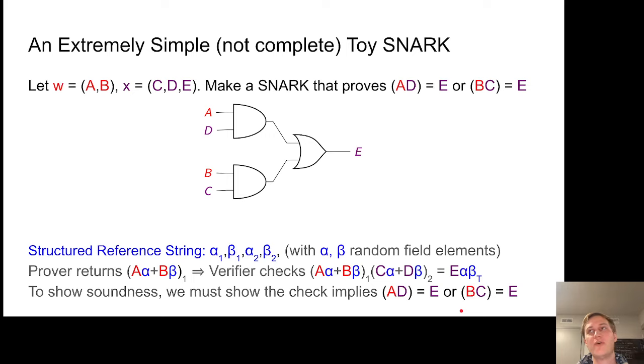I'll walk through how the proof goes for an extremely simple SNARK. This SNARK isn't even actually complete, but hopefully it'll demonstrate how the automated proof works. We have a prover that has access to unencrypted field elements A and B. The prover also has access along with the verifier to these additional statement elements C, D, and E. They want to make a SNARK that proves one of these two equalities: either A times D equals E or B times C equals E.